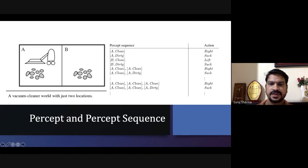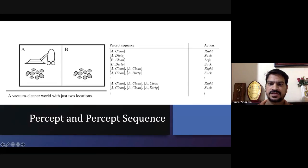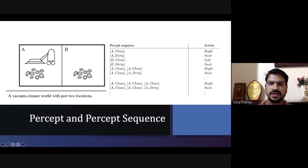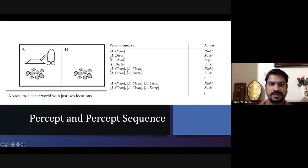In the vacuum cleaner example, we have two rooms A and B and dirt is available in both rooms. A percept sequence will take place based on the actions. If the sensor senses the room is clean, it will go to the right side. If in room A it finds the room is dirty, it will suck. If it finds B is clean, it will go left to reach room A.